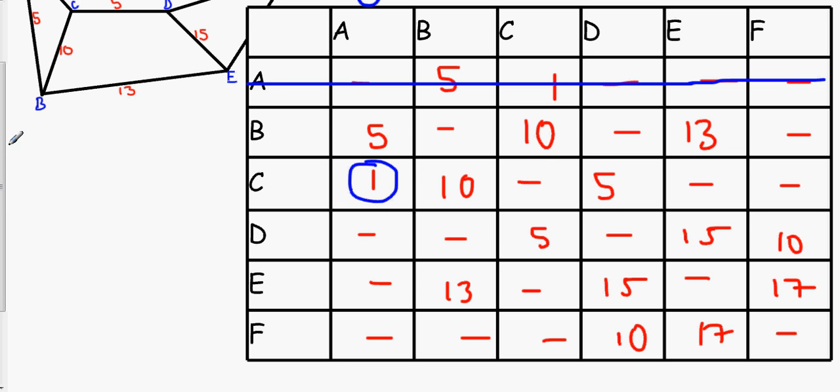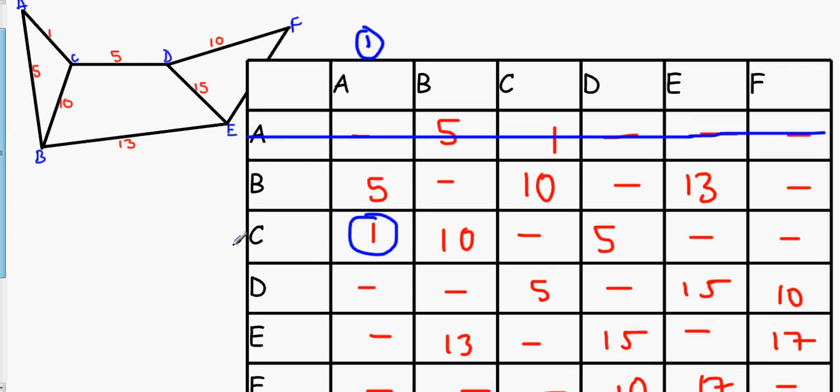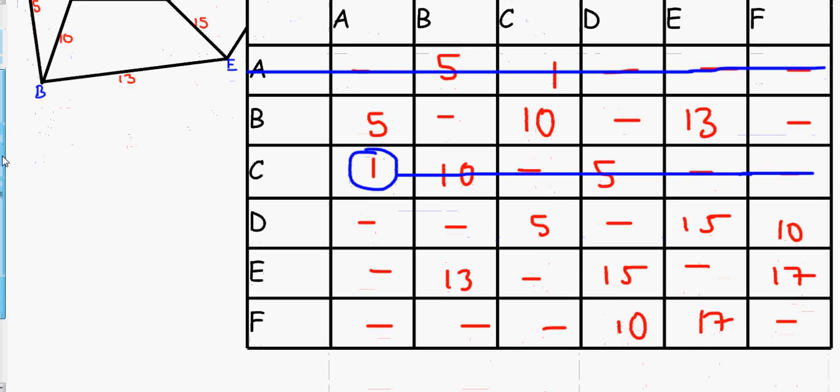So what you do, you pick the lowest number which is C over here. And you circle it and then you cross out the rest because you don't need any more. Now, since this is on the C column, this is your second vertex is being chosen for you.